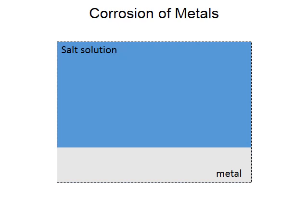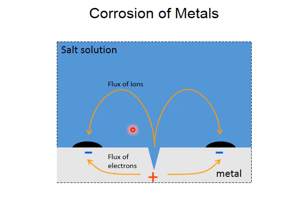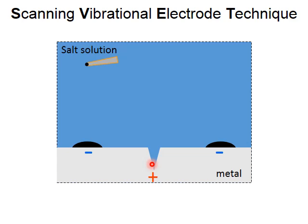When a metal surface is exposed to an electrolyte solution, the dissolution of the metal takes place at one side and the deposition of the oxidized metal takes place at the other side. This process causes a flux of ions through the water and a flux of electrons through the metal — that is, the formation of a negatively charged cathode and a positively charged anode.